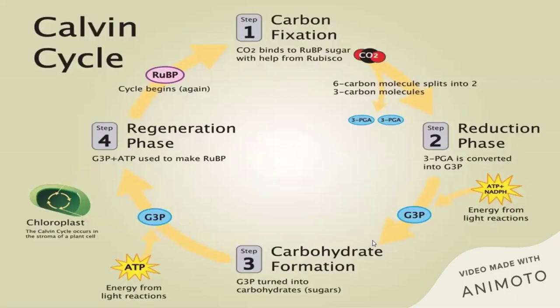Looking at this cycle — the Calvin cycle or light-independent stage — carbon dioxide is a central and important reactant, as you would have noted from the overall equation for photosynthesis. Carbon dioxide is fixed in the first step of the Calvin cycle, where it binds to a five-carbon sugar called ribulose bisphosphate to form an unstable six-carbon compound, with the assistance of RuBisCO. That unstable six-carbon molecule is then split to form two three-carbon compounds.